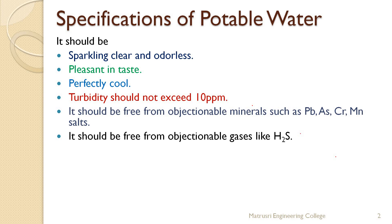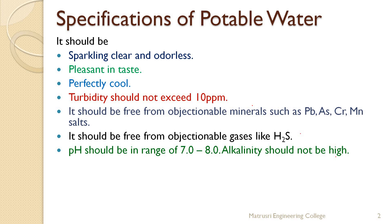It should also be free from objectionable gases like H₂S and ammonia, etc. These gases are not only toxic but also impart odor to the water. The pH should be in the range of 7 to 8; alkalinity should not be high. If drinking water is slightly alkaline in nature, we feel the water is tasty, but that alkalinity should not exceed 8.